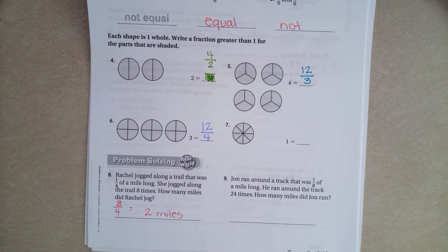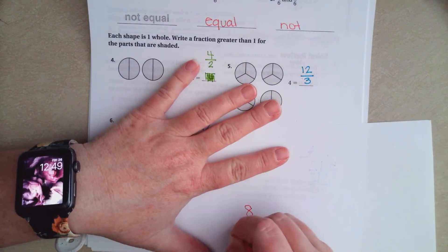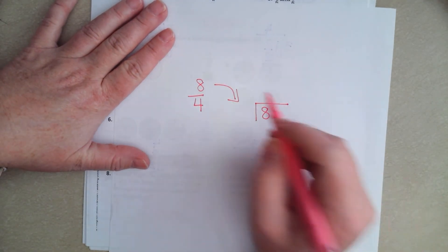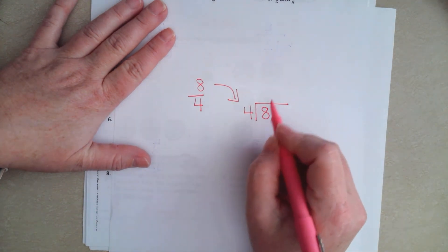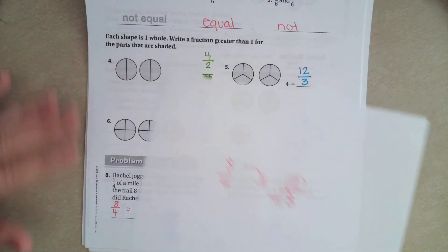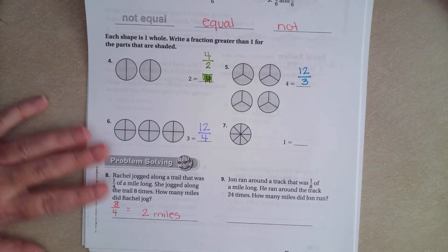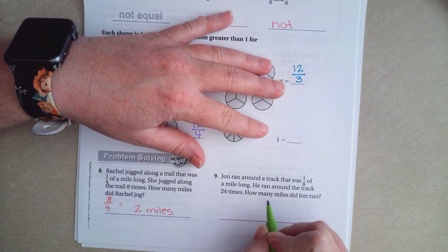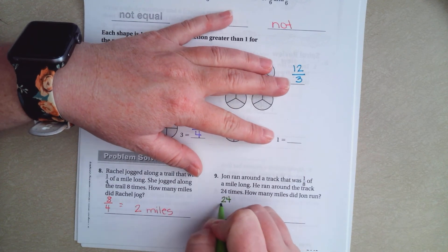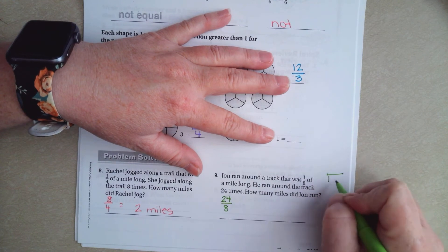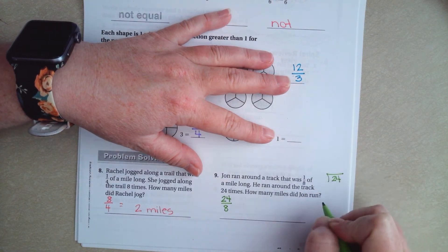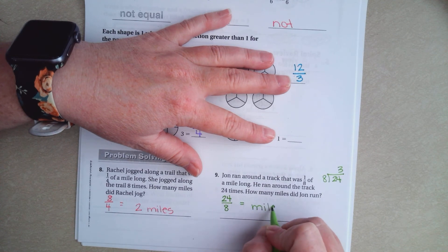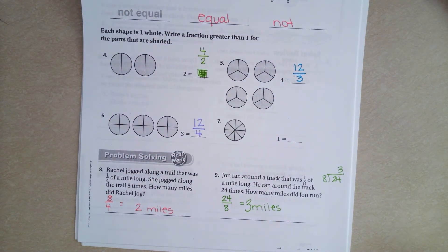When we are dividing fractions, we tend to say, we have 8 over 4. So we tend to say tip, trap, divide. So now, 4 goes into 8, 2 times. 2 miles. John ran around the track that was 1 eighth of a mile long. He ran around the track 24 times. So instead of the 1 eighth, it's going to be 24 over 8. So when we do tip, trap, divide, 8 goes into 24, 3 times. 3 miles.